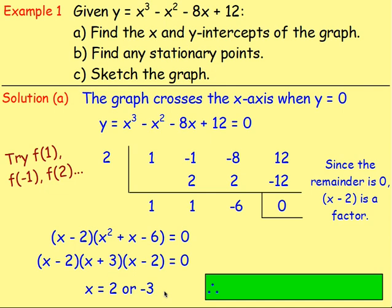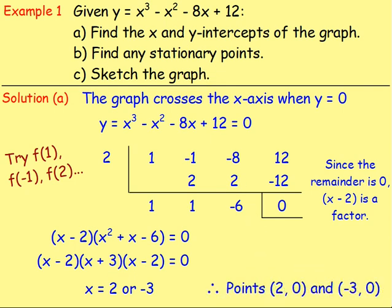We already have that, so you don't need to write it down twice. However, what this does mean is if you have it twice, it means it's a repeated root, which means the graph is probably going to have a turning point at 2. However, we'll look into that at part B for the stationary points. All you know just now is that it crosses the x-axis at the point 2, 0 and negative 3, 0.